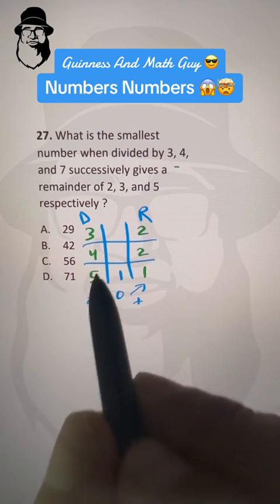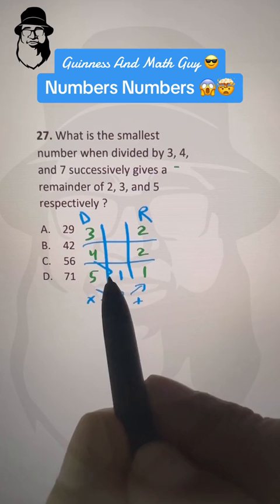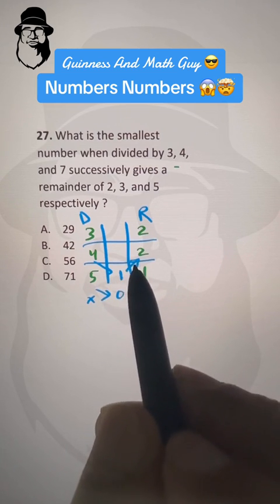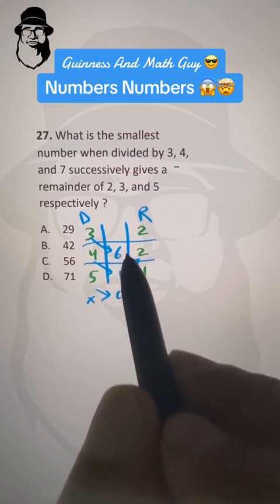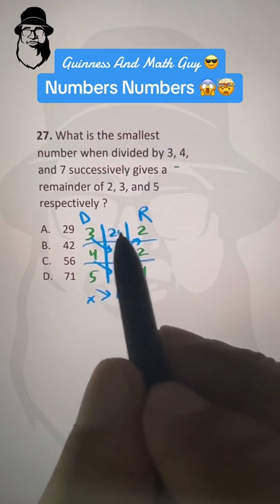Again, same process. 4 times 1 is 4 plus this 2 is 6. Then again, same process. 3 times 6 is 18 plus 2 is 20.